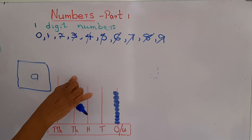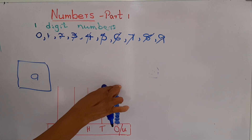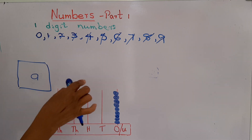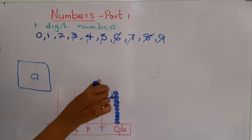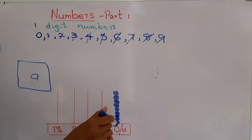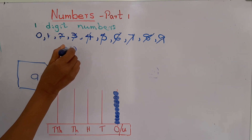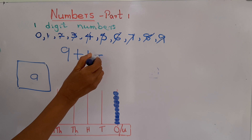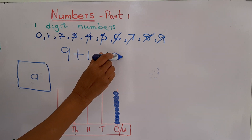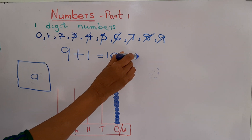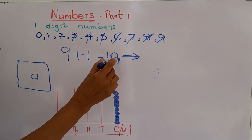Now the ones place is full. We can't add more rings here — only 9 rings. Then after number 9, when we add 1, the number becomes 10. Shall we explore number 10?